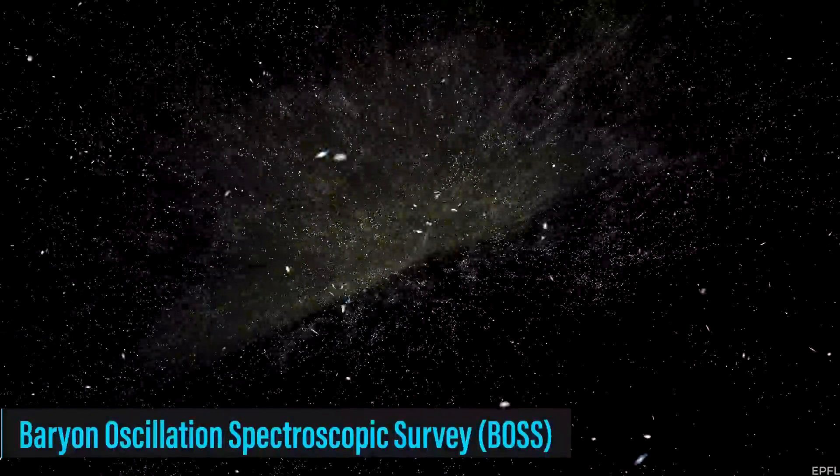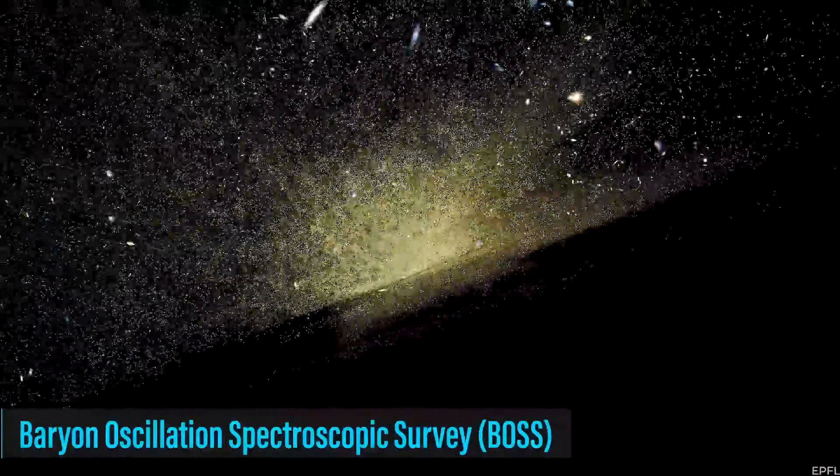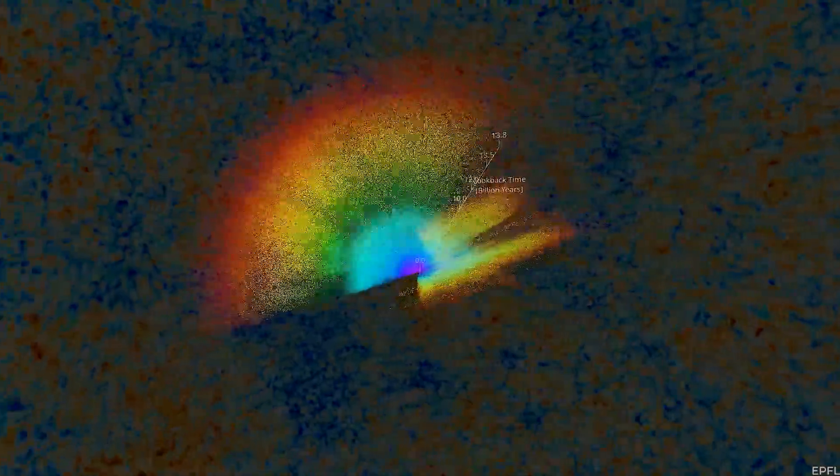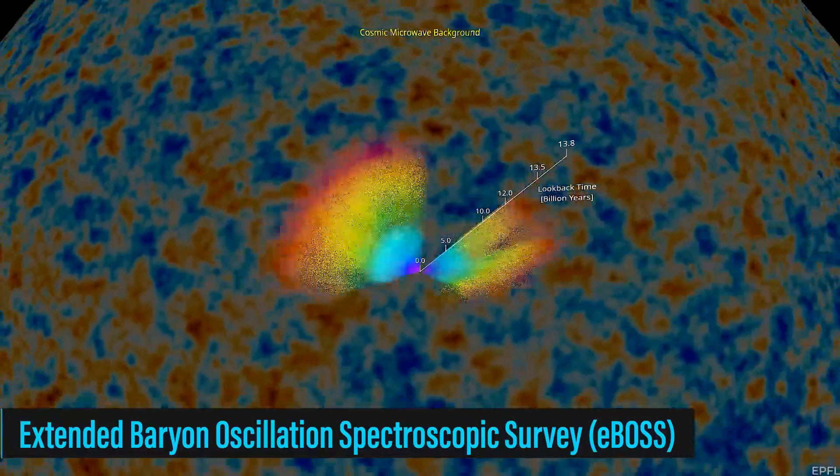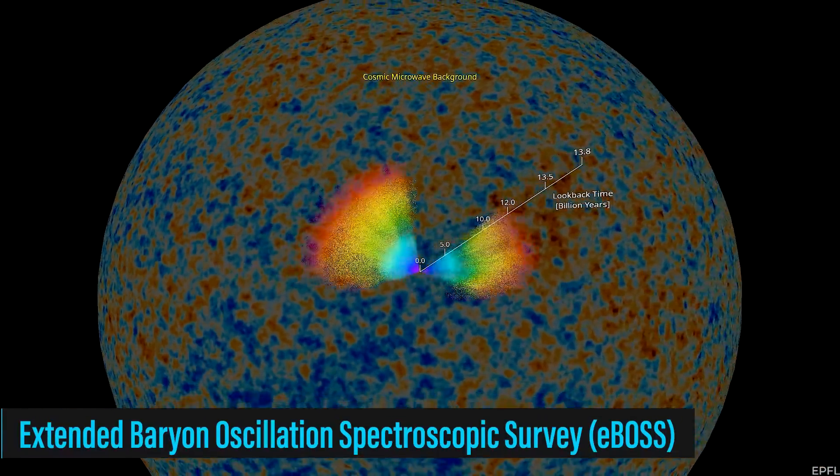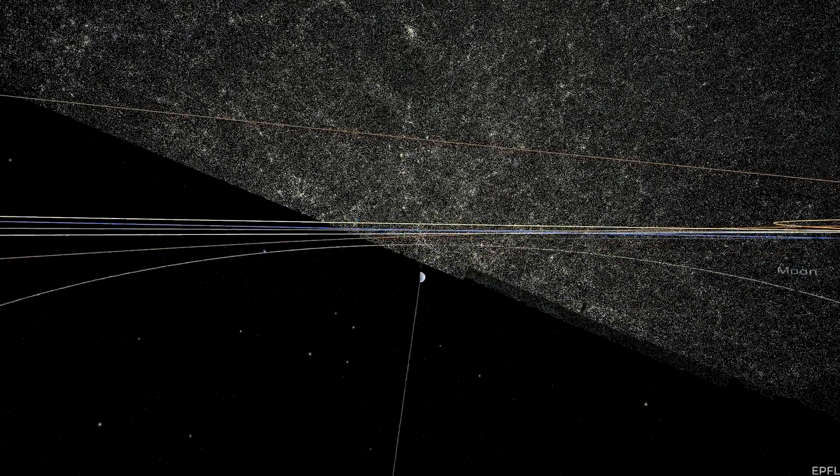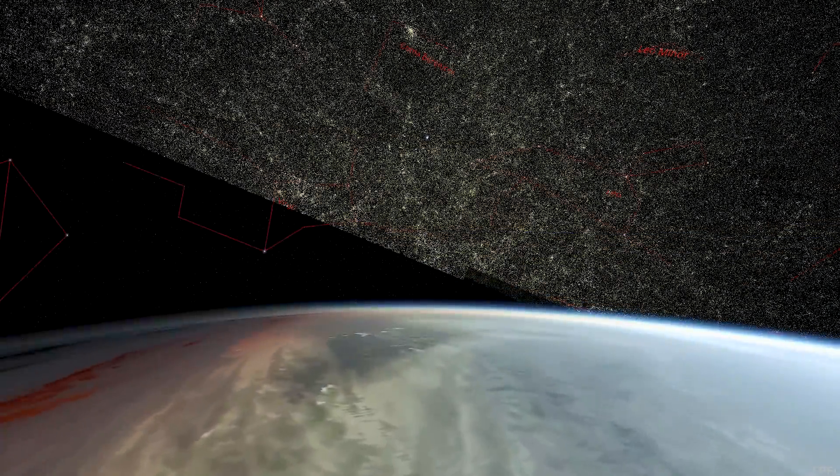We also have the Baryon Oscillation Spectroscopic Survey, or BOSS for short, which was part of the third Sloan Digital Sky Survey. It measured BAO from shifts in the colors of galaxies between 2009 and 2014. This work was continued by the Extended Baryon Oscillation Spectroscopic Survey, or EBOSS, as part of SDSS-4, which measures BAO from shifts in the colors of both galaxies and distant, brilliant objects called quasars.